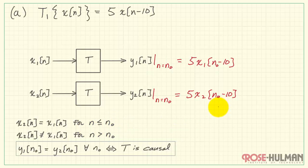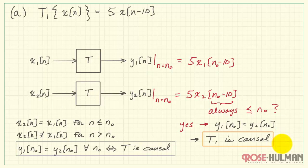Now, for these to be the same, we need to ensure that the time index expression is always less than or equal to n0. Well, we know that n0 minus 10 is always less than n0. Therefore, we conclude y1 and y2 are the same, and therefore T1 is causal.